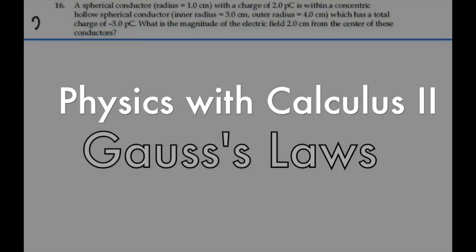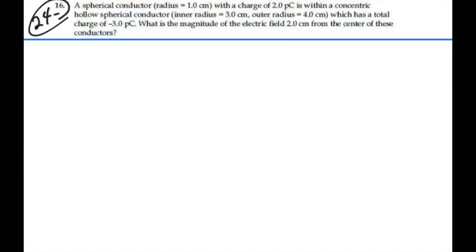Here's problem 24.16. A spherical conductor radius 1 centimeter with a charge of 2 picocoulombs is within a concentric hollow spherical conductor inner radius 3 centimeters, outer radius 4 centimeters, which has a total charge of minus 3 picocoulombs. What is the magnitude of the electric field 2 centimeters from the center of these conductors?